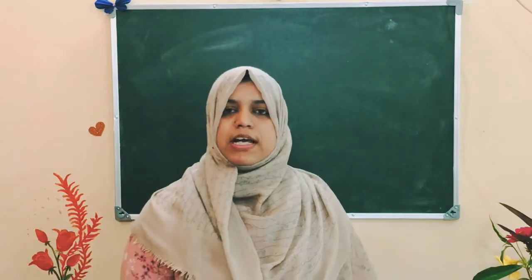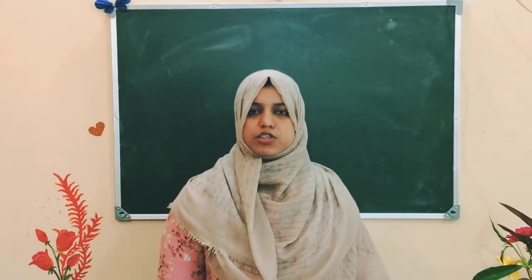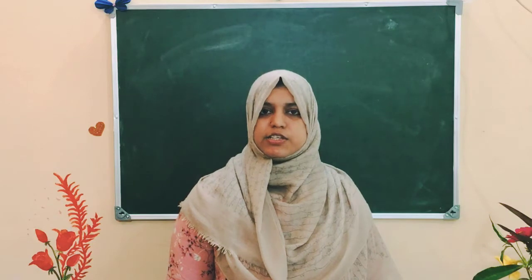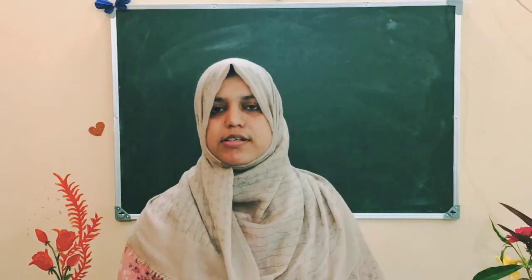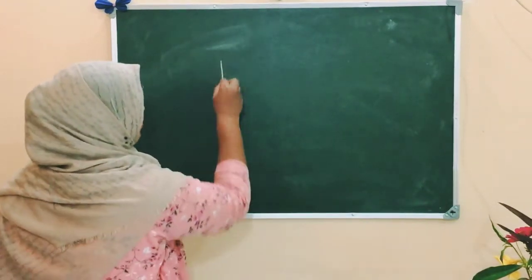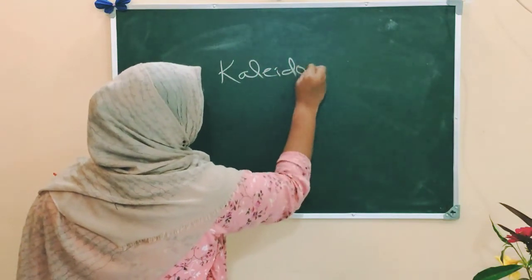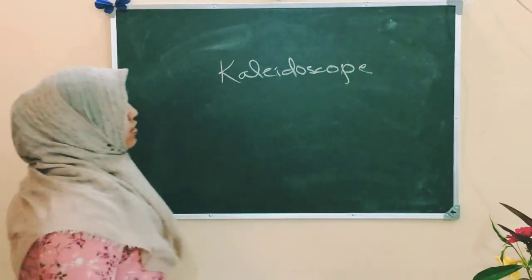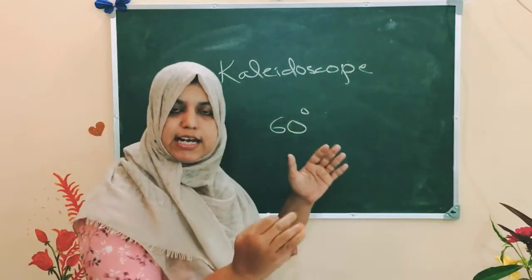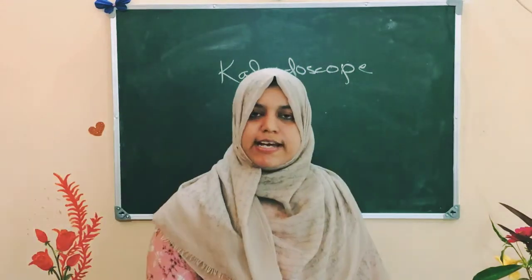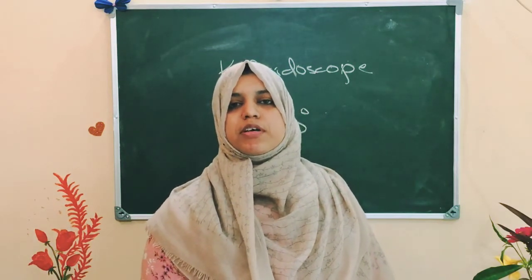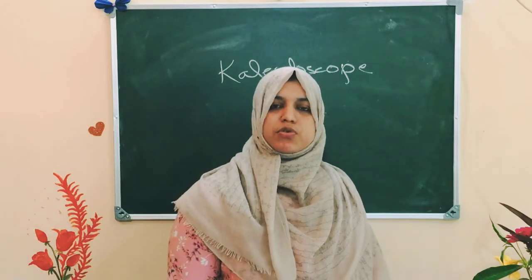Next is about the kaleidoscope. A kaleidoscope is a scientific toy — a very attractive toy. This instrument contains three rectangular plane mirrors inclined at an angle of 60 degrees to each other. Designers of wallpapers, fabrics, and artists use the kaleidoscope to get ideas for new patterns.